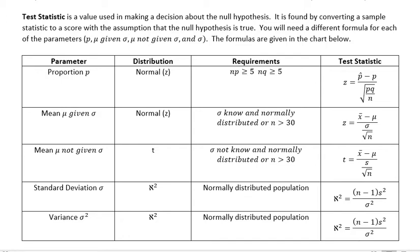You need a different formula for each of the parameters: p which is a proportion, mu given standard deviation that's a mean, if you're given a standard deviation you're talking about a z score, mu not given standard deviation which means we'd be talking about the t distribution, and standard deviation. The formulas are given in the chart below.